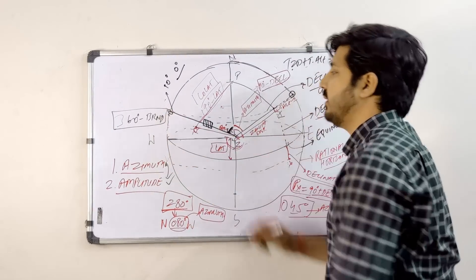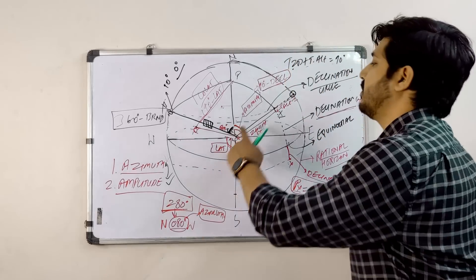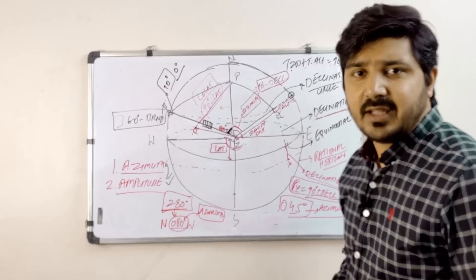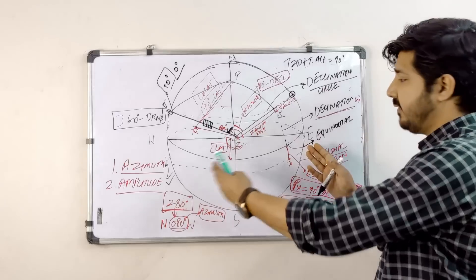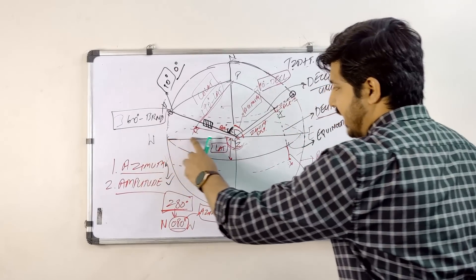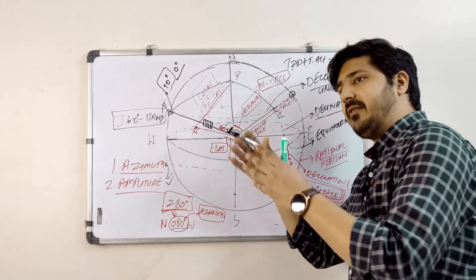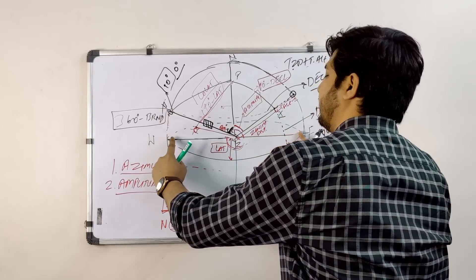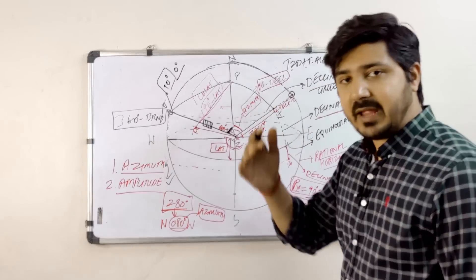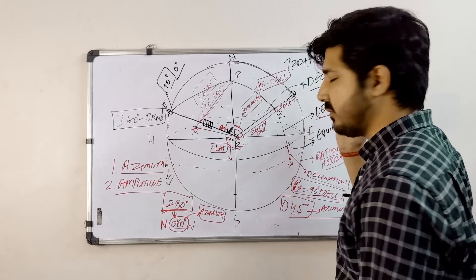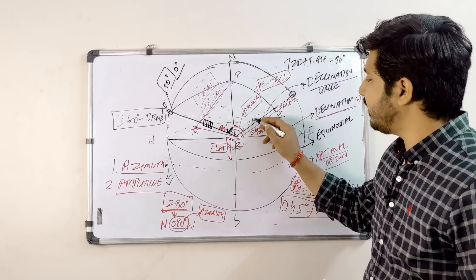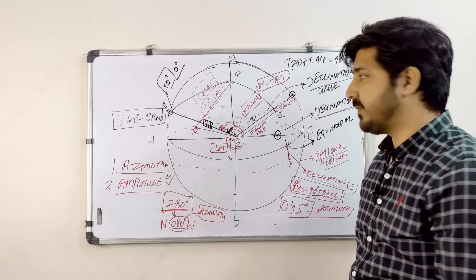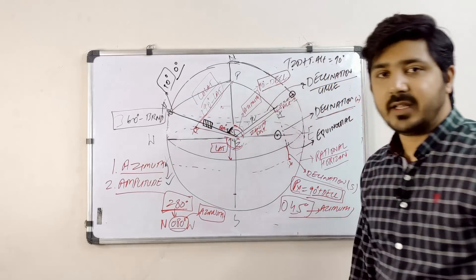So when the side ZX of the PZX triangle is 90 degrees, that means the body is on the rational horizon, giving amplitude. If the question says the body is on the prime vertical — which passes through east and west points — then the body is somewhere on that line, and in this case angle Z will become 90 degrees. So: body on rational horizon means ZX equals 90 degrees; body on prime vertical means angle Z equals 90 degrees.